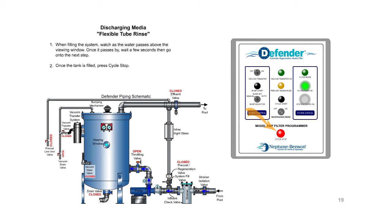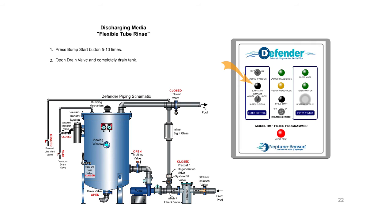When filling the system, watch as the water passes above the viewing window. Once it passes by, wait a few seconds, then go on to the next step. Once the tank is filled, press cycle stop. Turn bump selector switch to bump set. Press bump start button 5 to 10 times. Open drain valve and completely drain tank.